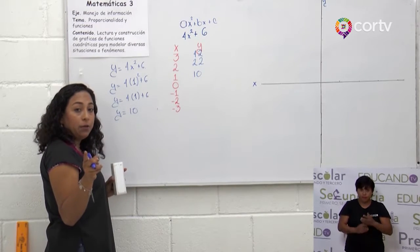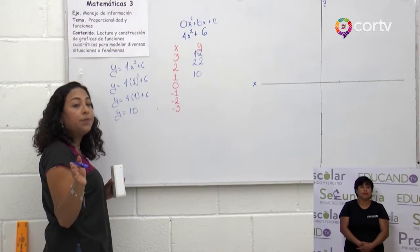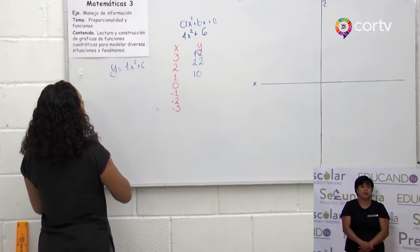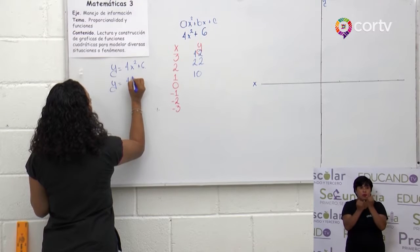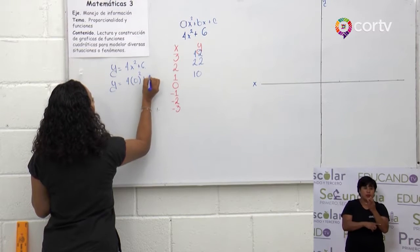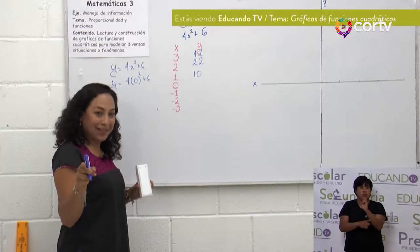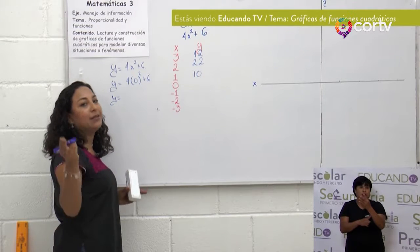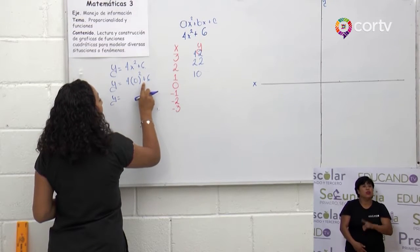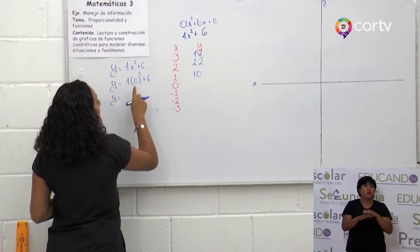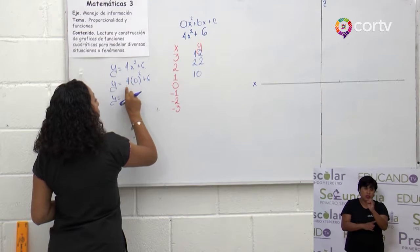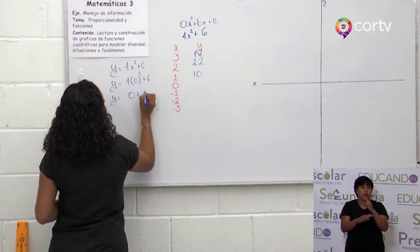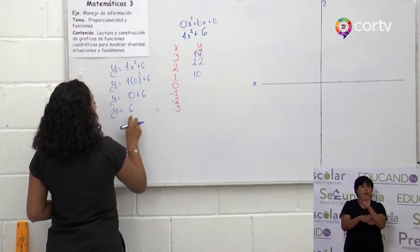Y es igual a 4 que multiplica a 0 elevado al cuadrado. 0 por 0 = 0. 0 por 4 = 0. Solo queda este 6. Porque 0 por 0 = 0, por 4 = 0, y por lo tanto esto quedaría con 6.